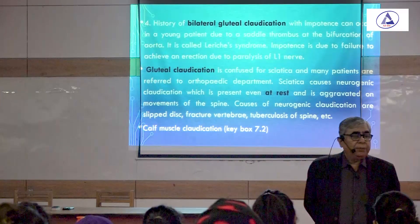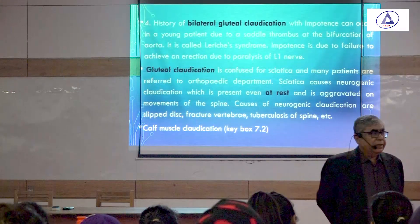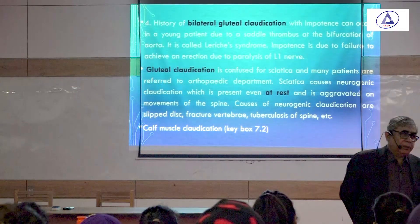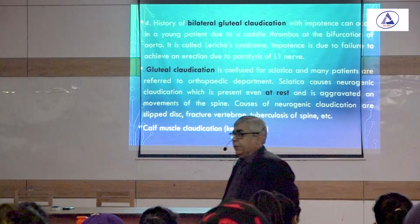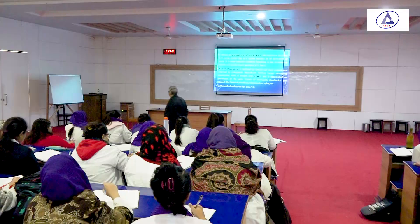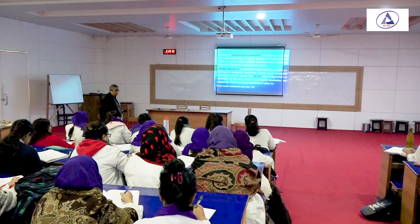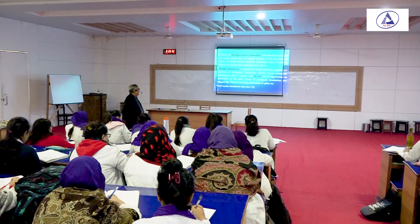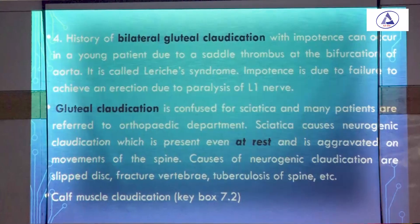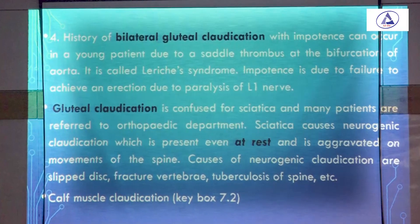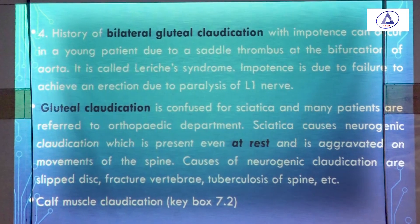Erectile dysfunction is partly due to lumbar 1 nerve paralysis. Gluteal claudication is confused for sciatica, and many patients are referred to the orthopedic department.